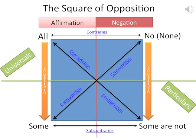Subalternation only works in one direction — from the universal down to the particular. This is similar to the concept of deduction, where we establish an overarching rule like 'all dogs are furry' and draw the deductive conclusion that 'some are furry.' To go in the other direction would imply inductive logic — observing particular furry dogs and asking whether we can make the universal statement that all dogs are furry without seeing the entire universal set. According to the traditional square of opposition, this is not possible.